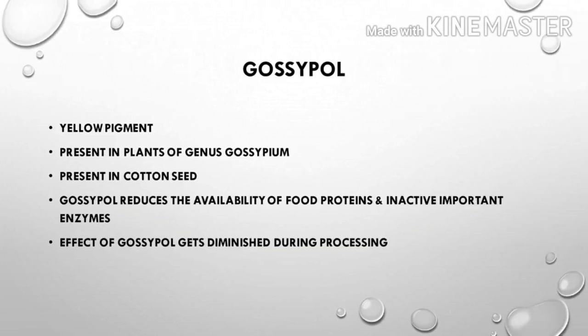Gossypol is a yellow pigment and an anti-nutritional factor found in cottonseed, from plants of the genus Gossypium. It reduces the availability of food proteins and inactivates important enzymes in the body.